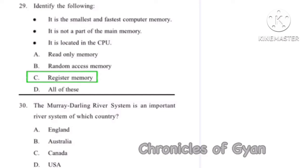Question 30: The Murray-Darling river system is an important river system of which country? The correct answer is Option B, Australia.